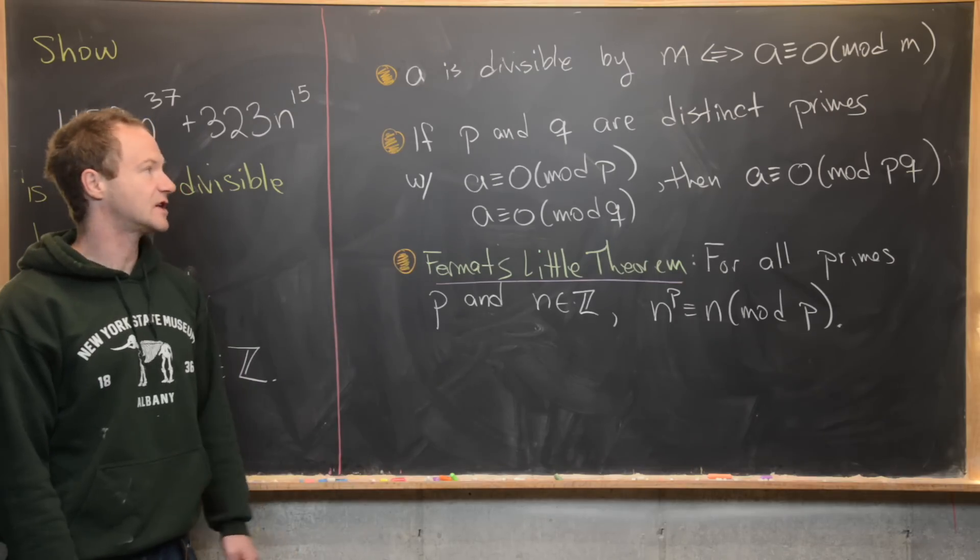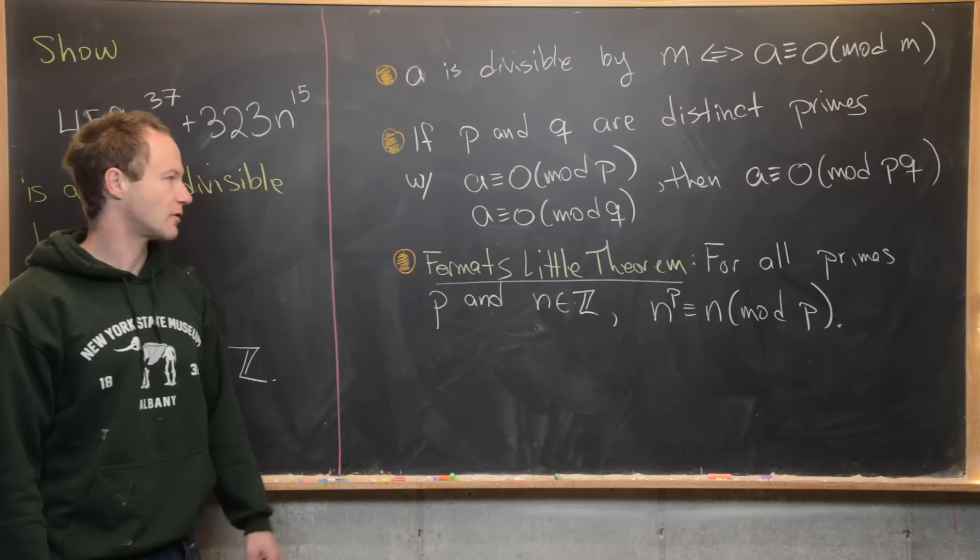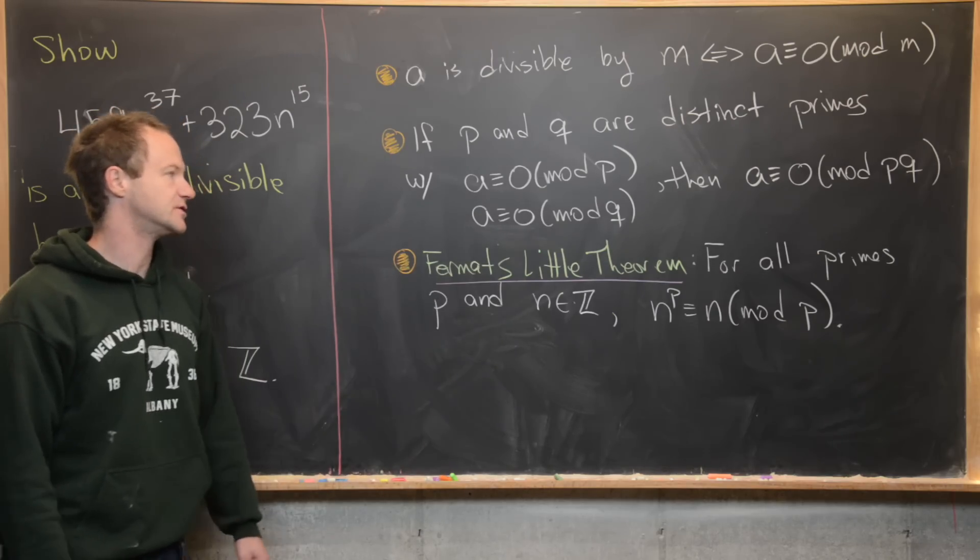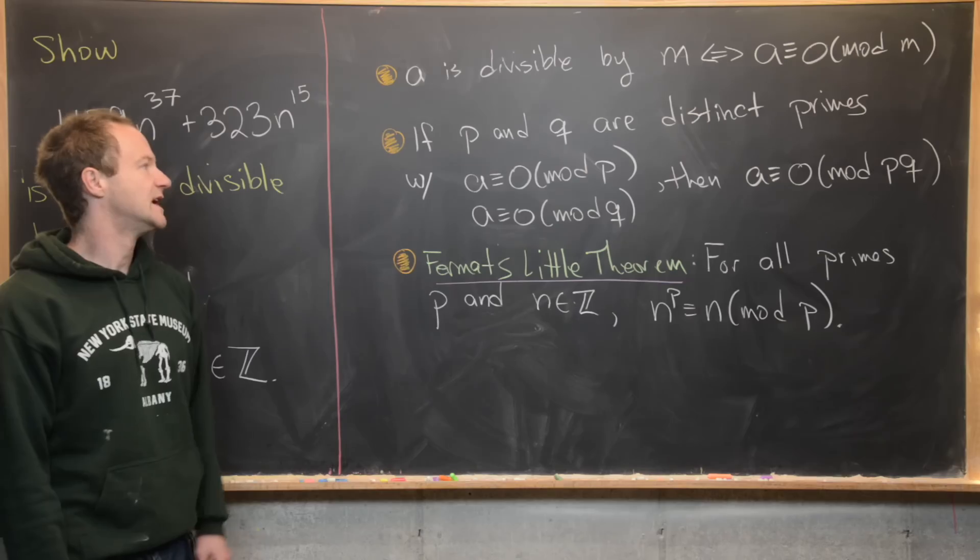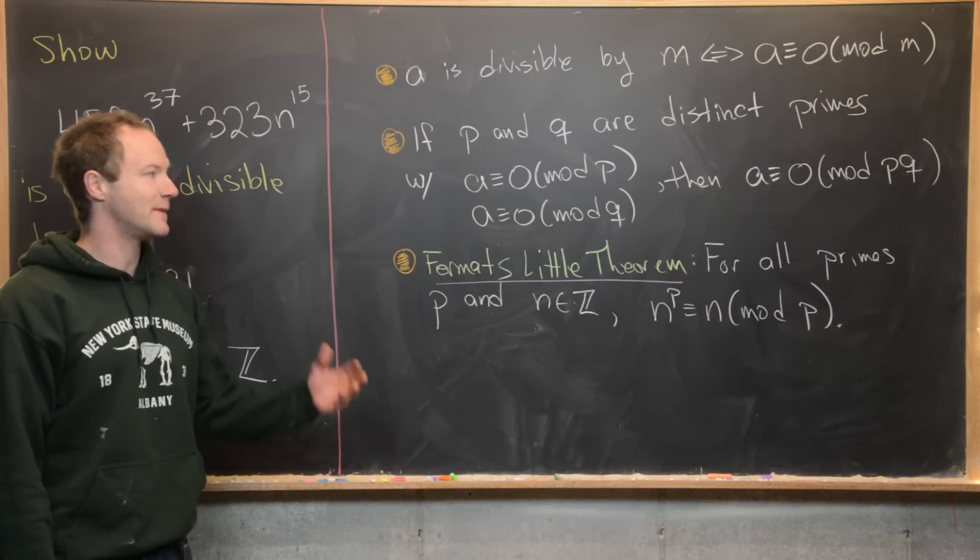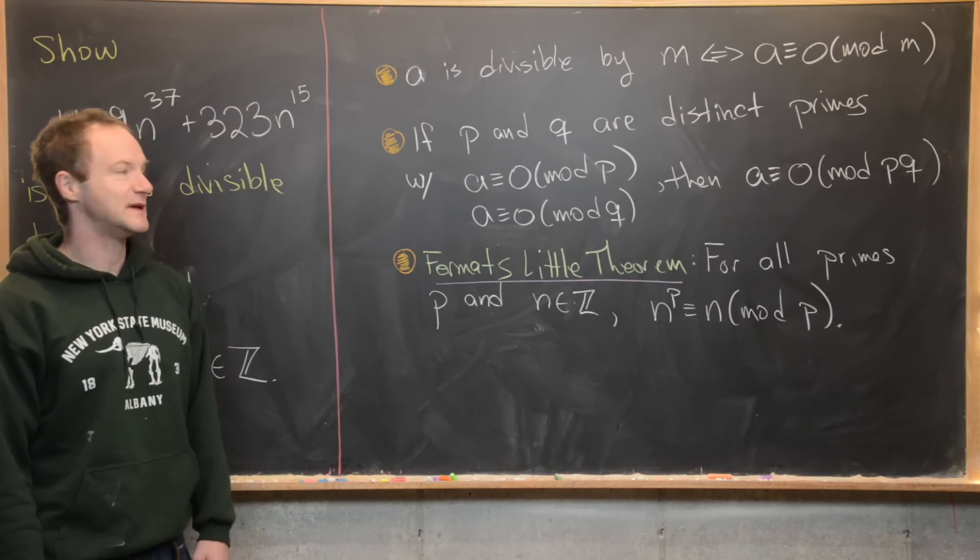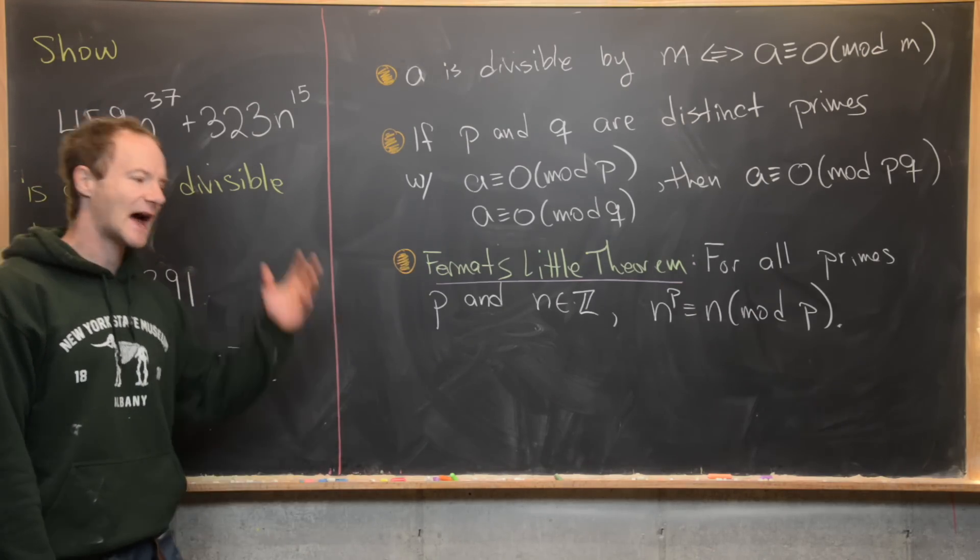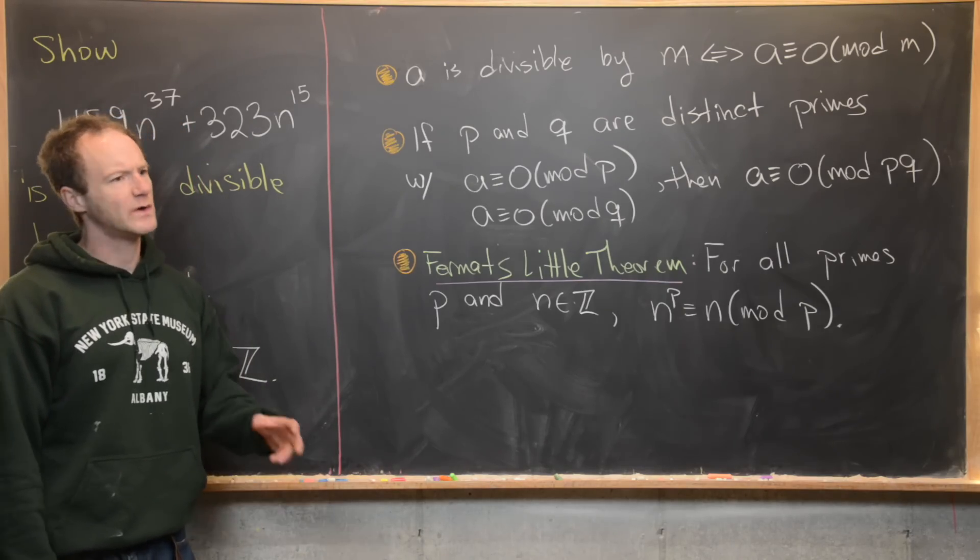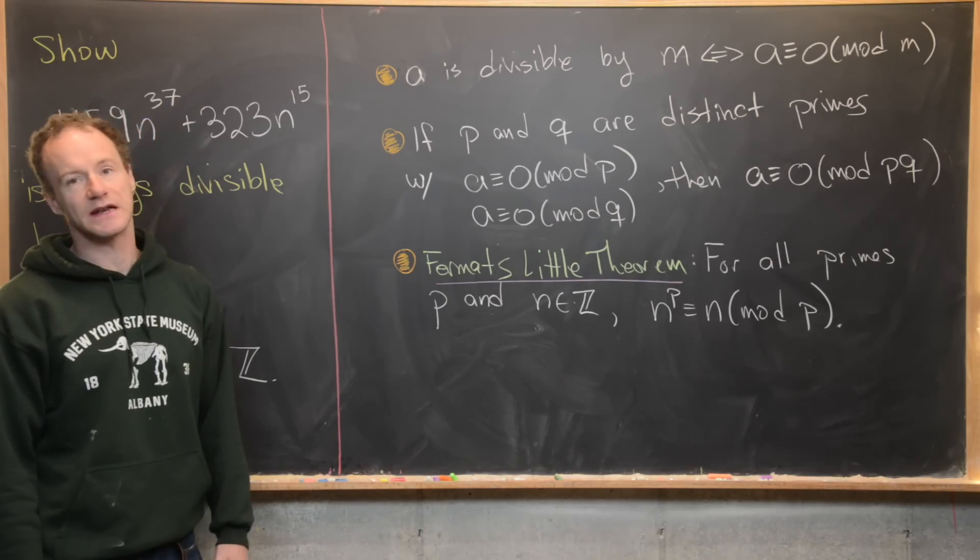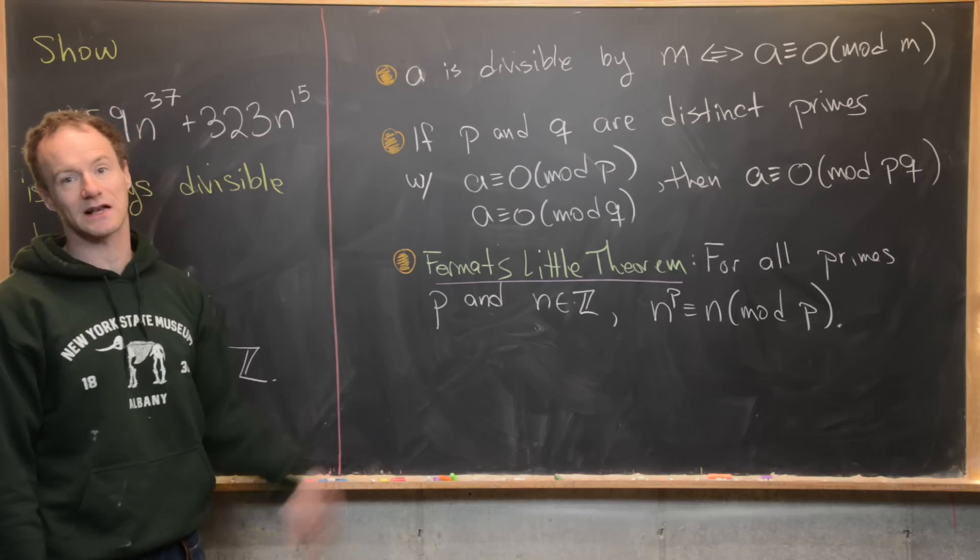Next, if p and q are distinct primes, a is congruent to zero mod p and a is congruent to zero mod q, then a is congruent to zero mod p q. In other words, if a is divisible by p and divisible by q, then a is divisible by p times q. It's not actually important that p and q are distinct primes here. What we mostly need is that p and q are relatively prime to each other, but we'll use this exactly in our solution.